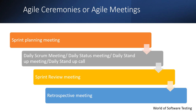Agile ceremonies are meetings with a defined length, frequency, and goals. The purpose of agile ceremonies is to help project teams plan, track, and engage stakeholders with their work, and help them reflect on how well they have worked together. The four agile ceremonies are: sprint planning meeting, daily scrum meeting, sprint review meeting, and retrospective meeting.